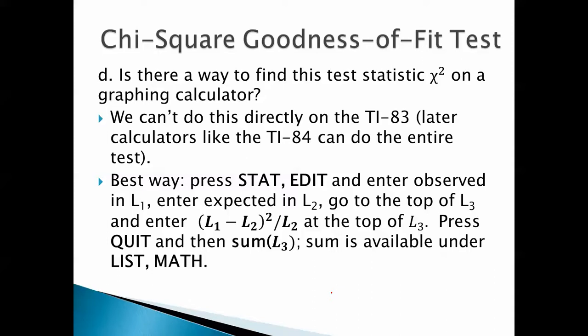Is there a way we can find this test statistic chi-squared on a graphing calculator? Well, we can't do this directly on the TI-83. Later calculators like the TI-84 can do the entire test. But if you've got a TI-83, here's the best way you can do it. You press stat, edit. You enter the observed in L1, enter the expected in L2. Then you go to the top of L3 and enter (L1 minus L2) squared over L2 at the top of L3. You press quit, and then sum of L3. The sum is available under list math.